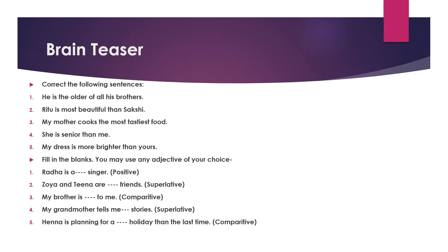Now here is a brain teaser for you. Correct the following sentences: 'He is the oldest of all his brothers.' 'Ritu is most beautiful than Sakshi.' 'My mother cooks the most tastiest food.' 'She is senior than me.' 'My dress is more brighter than yours.' Also fill in the blanks using any adjective of your choice: 'Radha is a ___ singer.' (positive degree); 'Zoya and Tina are ___ friends.' (superlative degree); 'My brother is ___ to me.' (comparative degree); 'My grandmother tells me ___ stories.' (superlative degree); 'Hina is planning for a ___ holiday than last time.' (comparative degree).